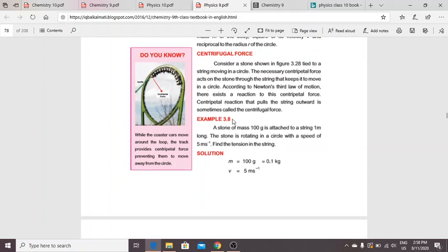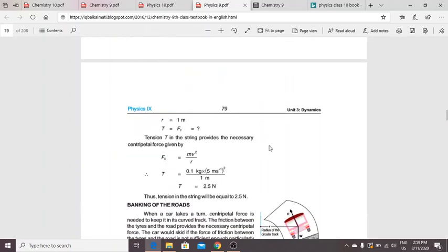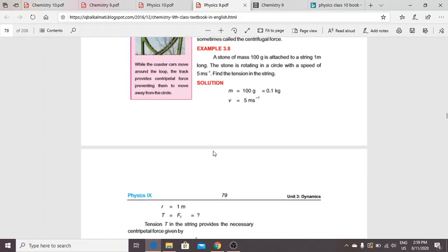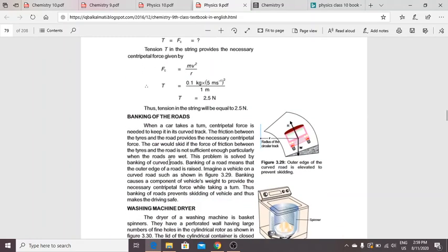Let's consider an example. A stone of given mass is attached to a string one meter long. The stone rotates in a circle with a given speed and radius. What is the tension? The tension equals the centripetal force, so the formula is mv squared over r.